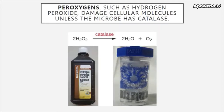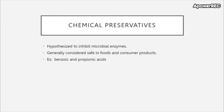Next are peroxigens. You may recall that hydrogen peroxide is highly reactive, and these molecules are often used as antimicrobials. We can also have antimicrobials in our food as chemical preservatives, such as benzoic and propionic acids, which are thought to inhibit microbial enzymes.